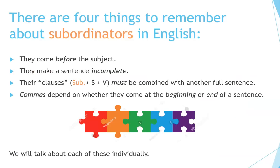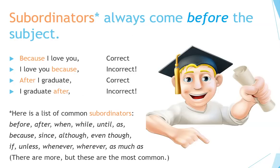There are four things to remember about subordinators in English: they come before the subject; they make a sentence incomplete; their clauses (subordinator + subject + verb) must be combined with another full sentence; and commas depend on whether they come at the beginning or end of a sentence. Subordinators always come before the subject. 'Because I love you' is correct; 'I love you because' is incorrect. 'After I graduate' is correct; 'I graduate after' is incorrect.